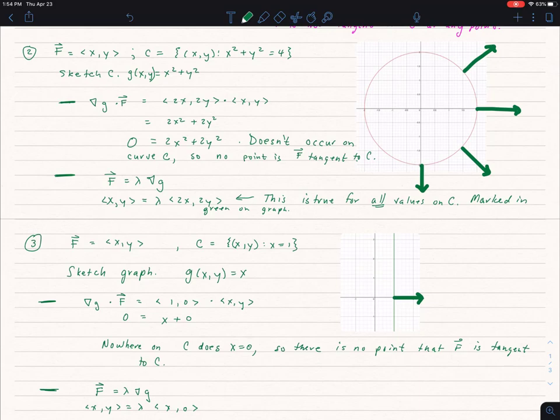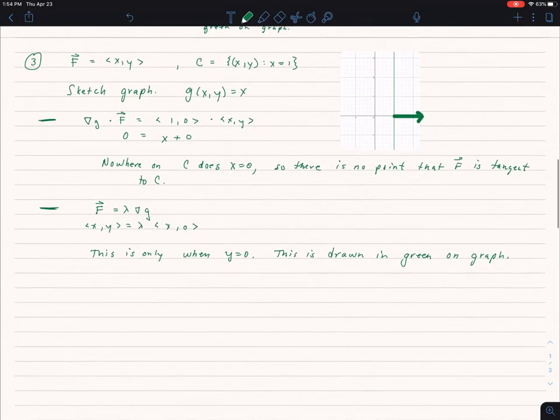Let's do one final example. And I'm doing this quickly, but you'll have the paper to look at so you can go through this more slowly. Let's say F is equal to x comma y. C is equal to the line x equals 1. So I'm going to let G equal x, and the gradient of G dotted with F will be 0 equals x plus 0, and nowhere along that curve does x equal 0. So there is no point that F is tangent to C.